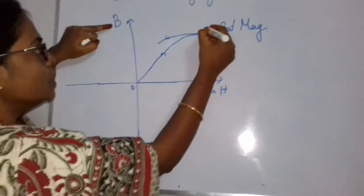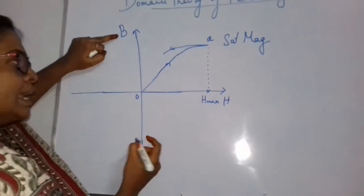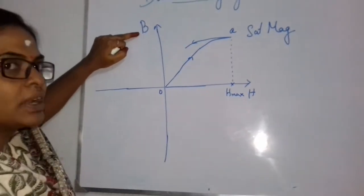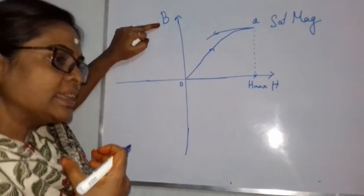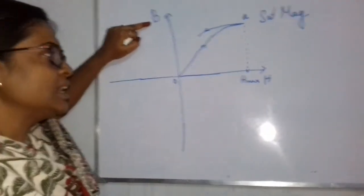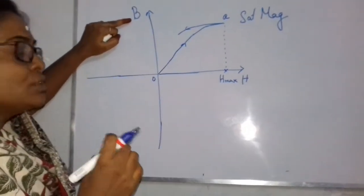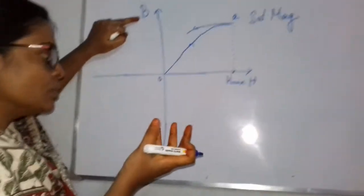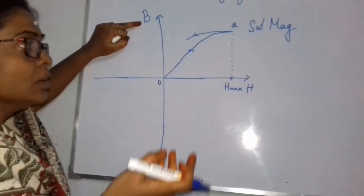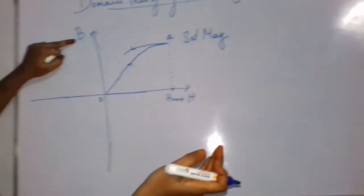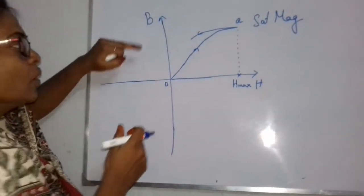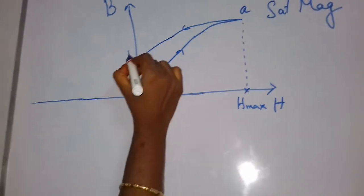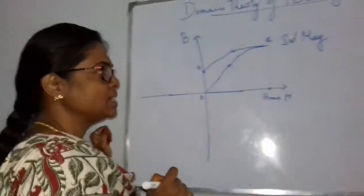We name the initial magnetization curve O to A. When we decrease the field, it will not retrace the path from A back to O. Instead, it goes to some other position — let us call it B. So A to B is the demagnetization curve. The curve does not retrace; it goes to a different position.